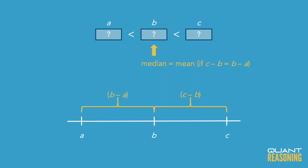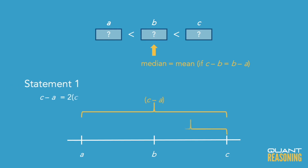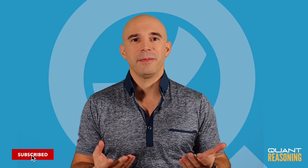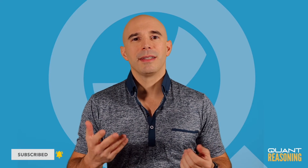So that's really what this question is asking: are we looking at an evenly spaced set? Are A and C equidistant from B? Now, statement one says the total distance between A and C is exactly double the distance between B and C. That does mean that B is exactly the midpoint of the set — the deviations on either side of B cancel out. So this is sufficient on its own to answer the question, and we can eliminate BCE.